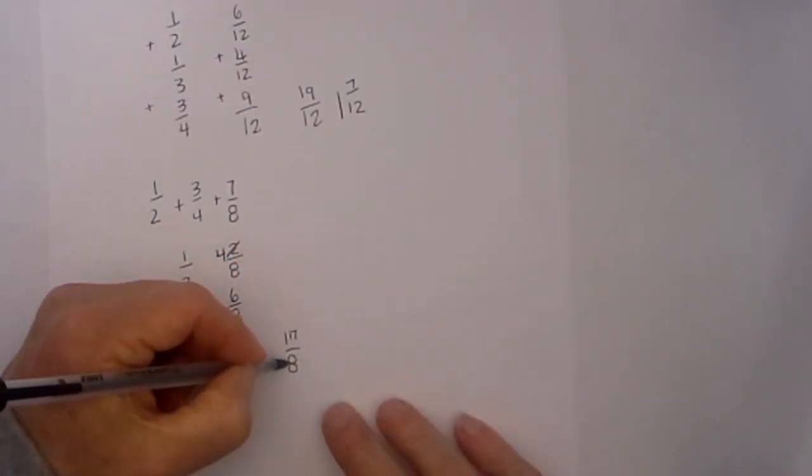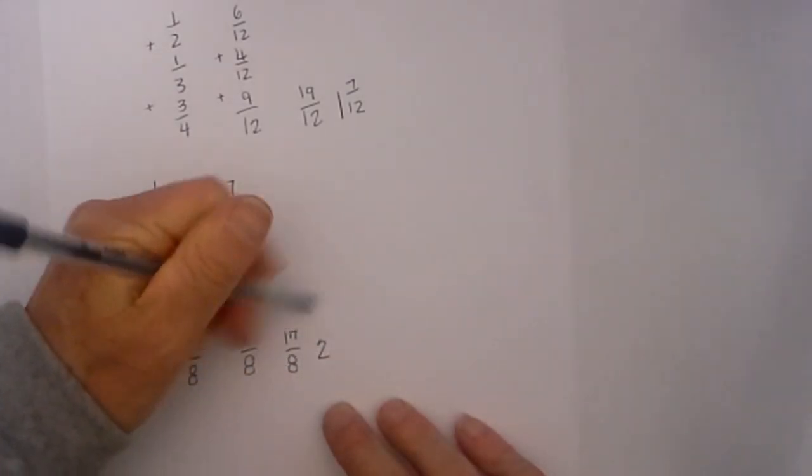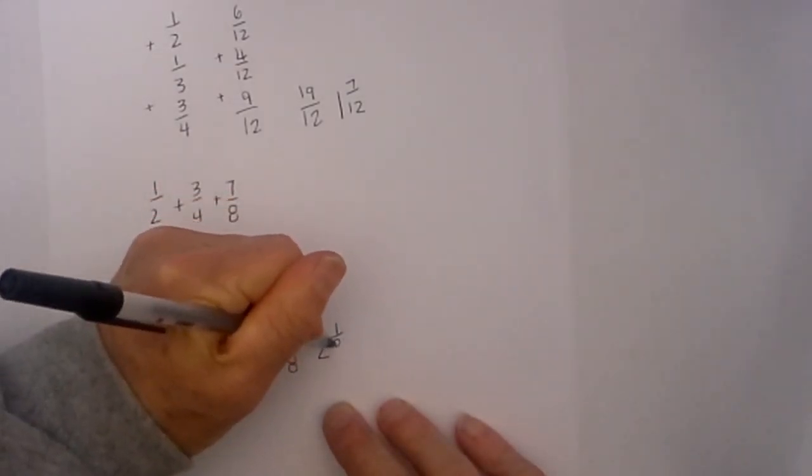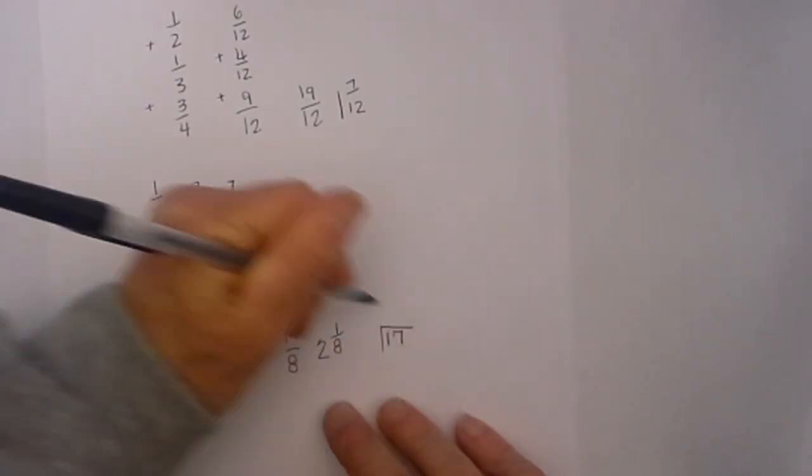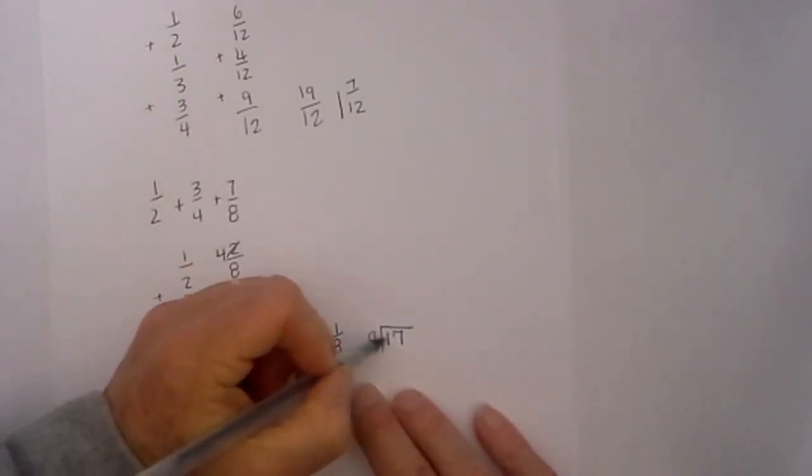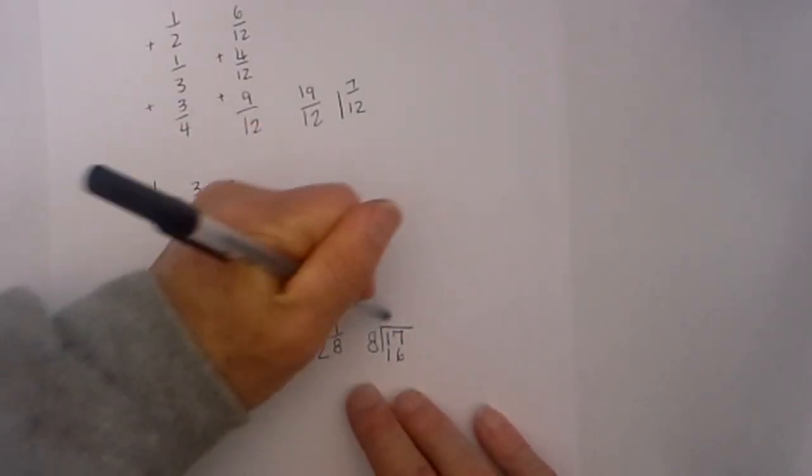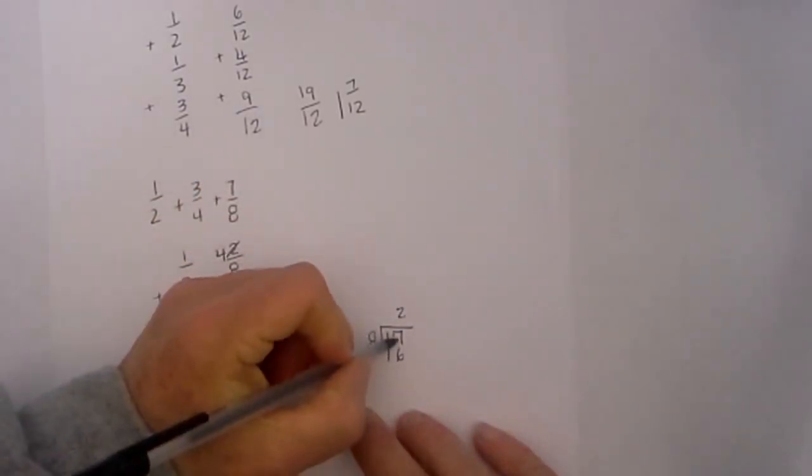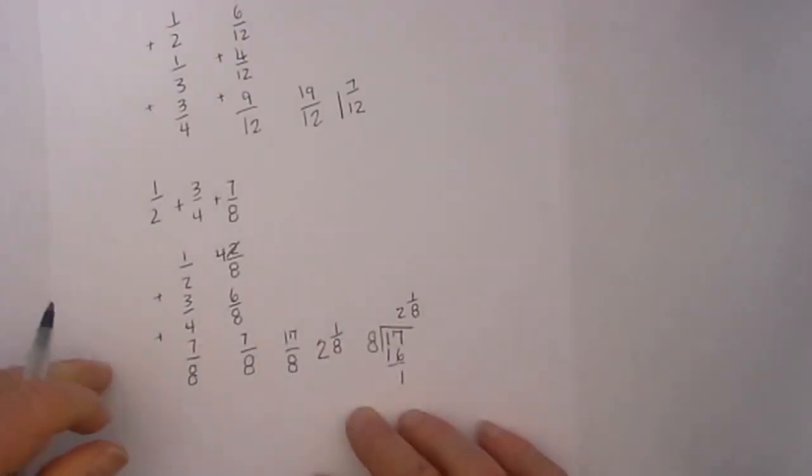I have an improper fraction. Eight will go into seventeen two times, which is sixteen, and that leaves one left over. Let me go very quickly through how I converted the improper fraction into a mixed number. Eight goes into seventeen two times, that's sixteen, and then seventeen minus sixteen is one, so that becomes one eighth.